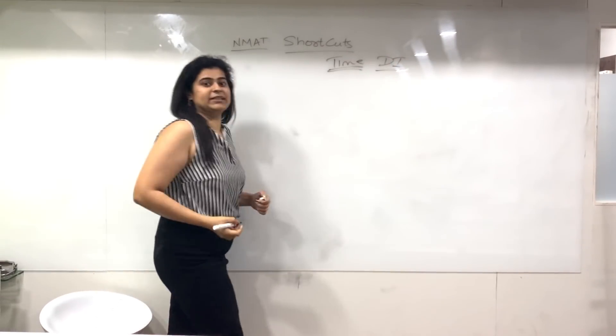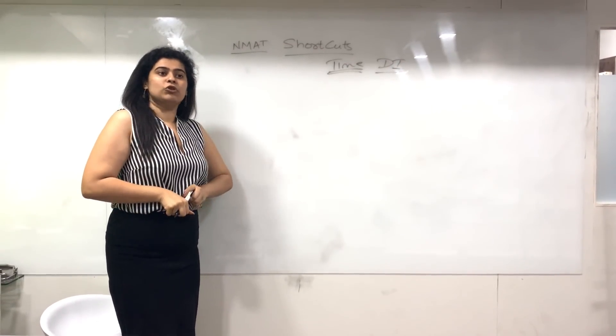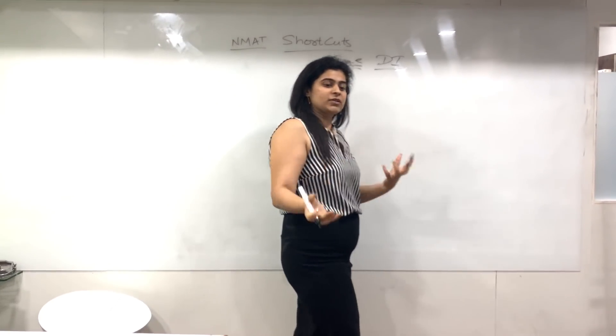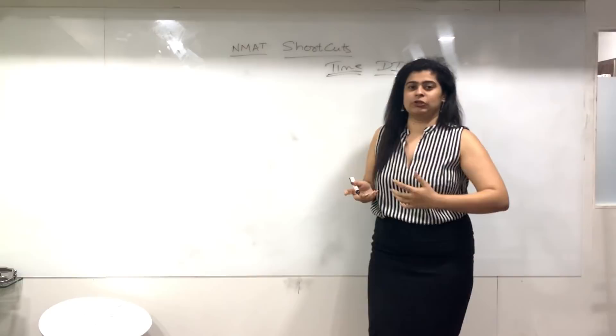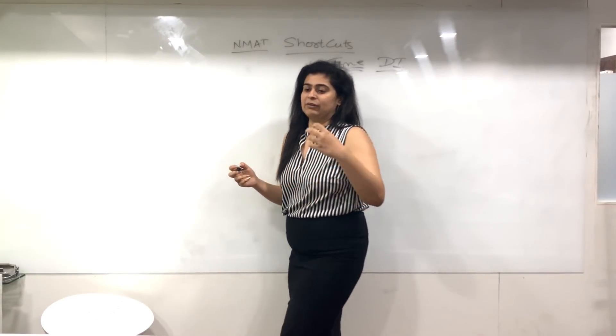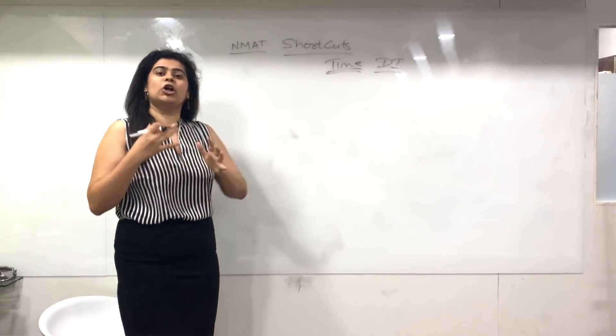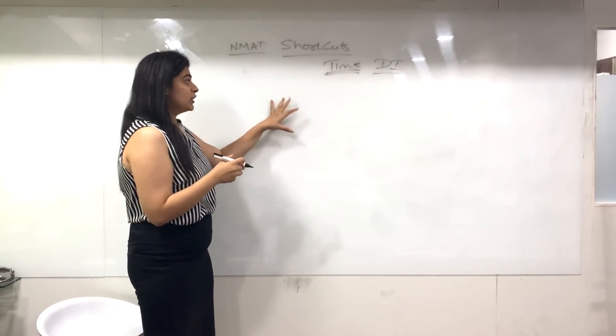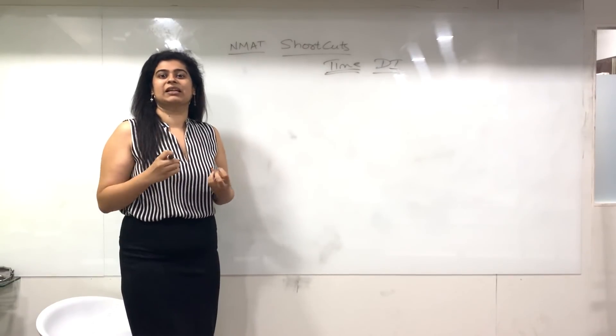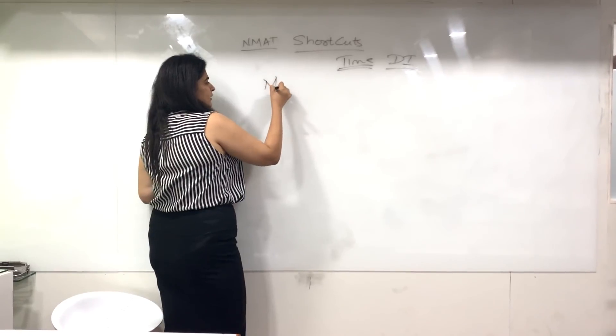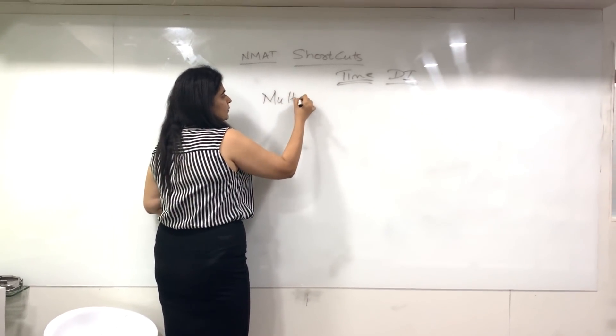Most questions in data interpretation involve finding percentage increases in population or similar calculations. For example, if you need to find 52% increase out of 75,000, there's a lot of calculation and very little time—you have 60 seconds per question. Today I'll teach you a shortcut technique to make multiplication really fast.